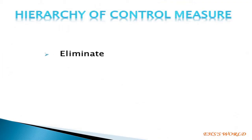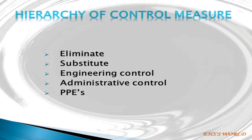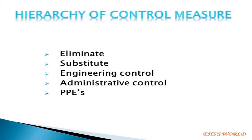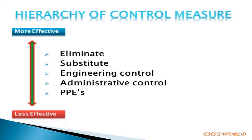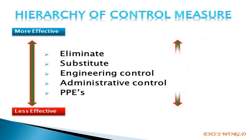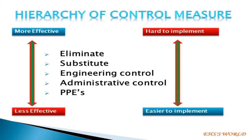The hierarchy of control measures is: 1. Eliminate, 2. Substitute, 3. Engineering control, 4. Administrative control, 5. PPE — always PPE comes last. Elimination, substitution, and engineering controls are more effective but harder to implement. Administrative controls and PPE are less effective but easier to implement. Always while carrying out risk assessment, we must go step by step through the hierarchy.